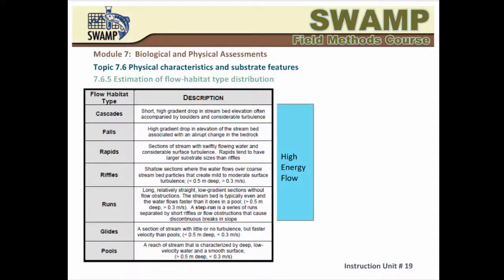It takes training and practice to identify habitat types, but the task is easier if you categorize the various types by gradient, water depth, current velocity, and the position of the substrate in relation to the water surface — that is, whether the substrate is breaking the surface or not. The descriptions in the SWAMP SOP make the categorization easier. Next, you'll see the demonstration video with examples of flow habitat types and the way the assessment is done.